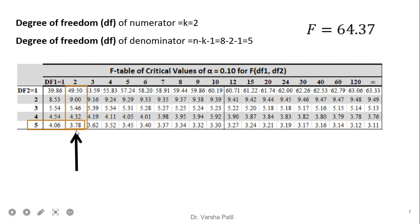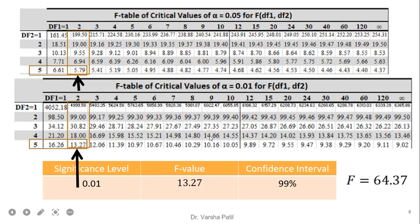Our calculated value 64.37 is more than 3.78, so at alpha equal to 0.10 we reject the null hypothesis. Checking finer significance levels: at 0.05 the table value is 5.79, and at 0.01 the table value is 13.27. Since 64.37 is still greater than 13.27, we can say that our variables are significant at 99 percent confidence.